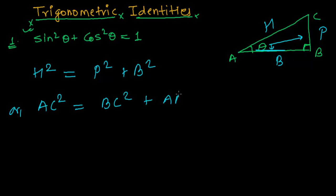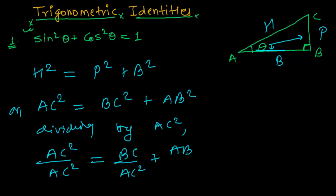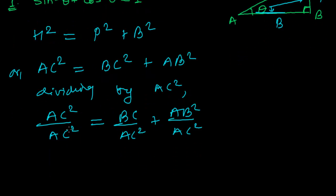Now let me divide the whole equation by AC². So dividing both sides by AC² gives us: AC²/AC² equals BC²/AC² plus AB²/AC².